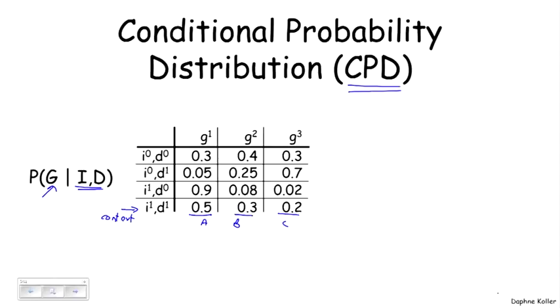And as we can see, these numbers sum to one as they should because this is a probability distribution over g for this particular conditioning context. And you can easily verify that this is true for all of the other lines in this table. So this is, again, a particular type of factor, one that satisfies certain constraints. In this case, that each row sums to one.